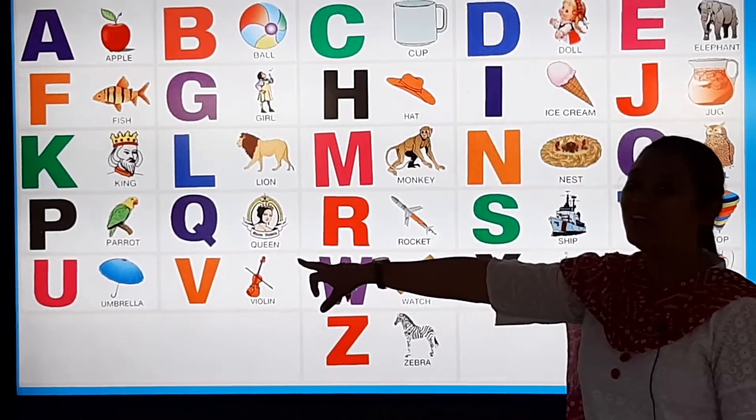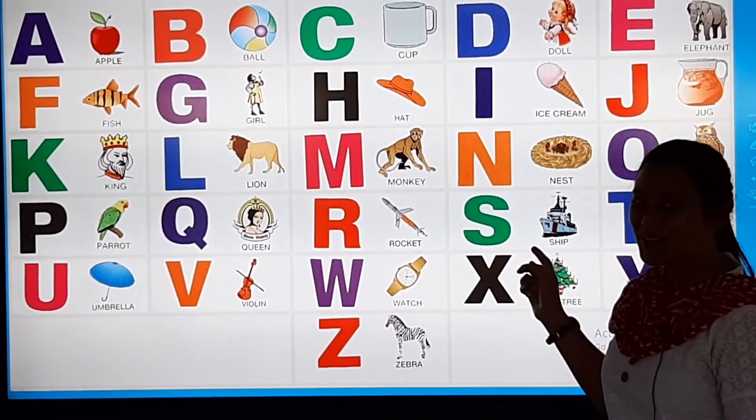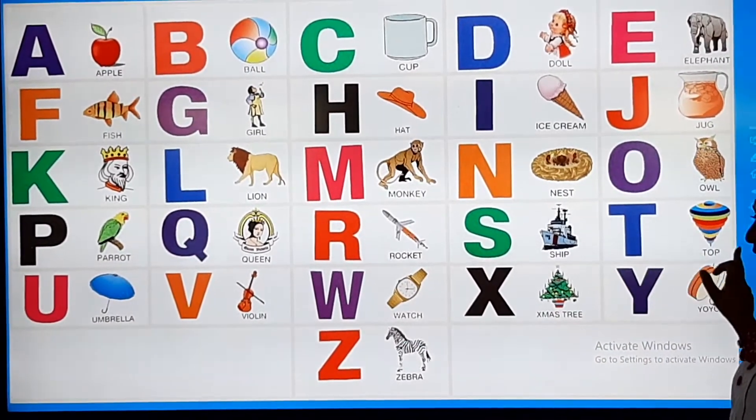Q for Queen, R for Rocket, S for Ship, T for Top.